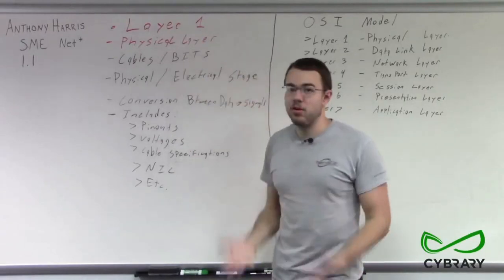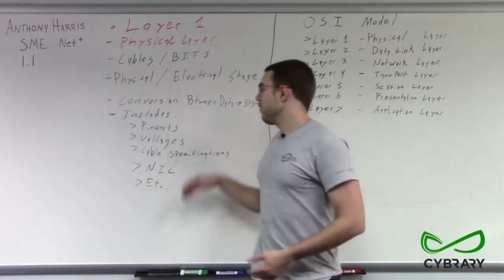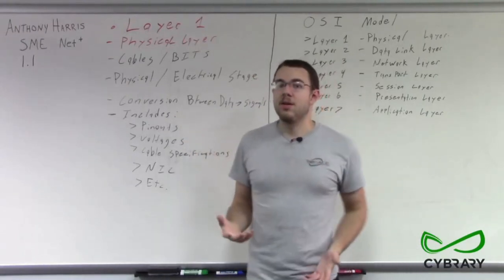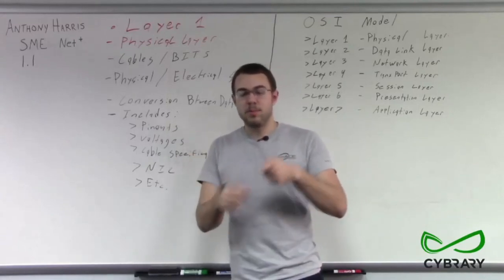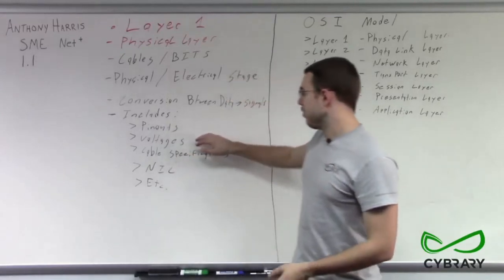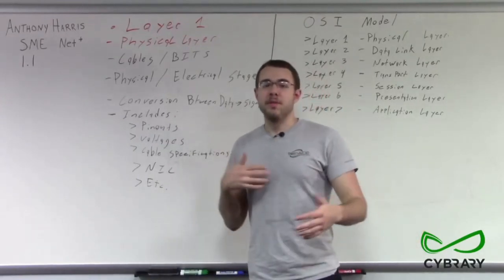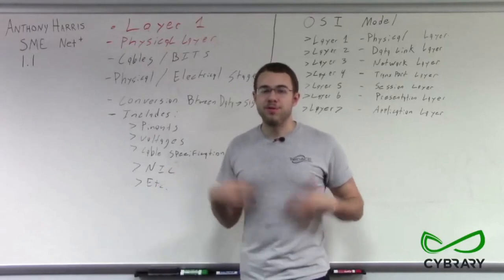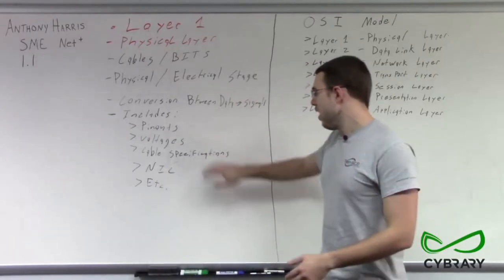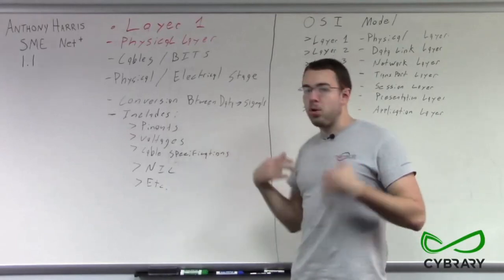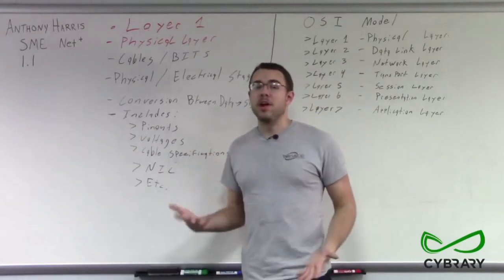We need to understand that point in our OSI model, and that's going to be our layer 1, our physical layer. This physical layer includes everything from pinouts — such as the pinouts on our cables and the pins that we plug into our connectors — to voltages. When we're measuring the voltages going across a cable, those are considered layer 1: physical voltages. Cable specifications are all layer 1, and network interface cards are also layer 1 components.